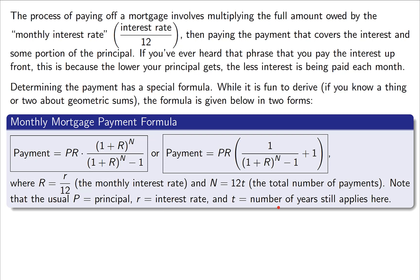But when we use this formula we use this capital R, which is the monthly interest rate, and this capital N, which is the total number of payments. To find the monthly interest rate we'll take our usual annual interest rate and divide it by 12. To find the total number of payments we'll take the number of years and multiply it by 12 to convert it to months.